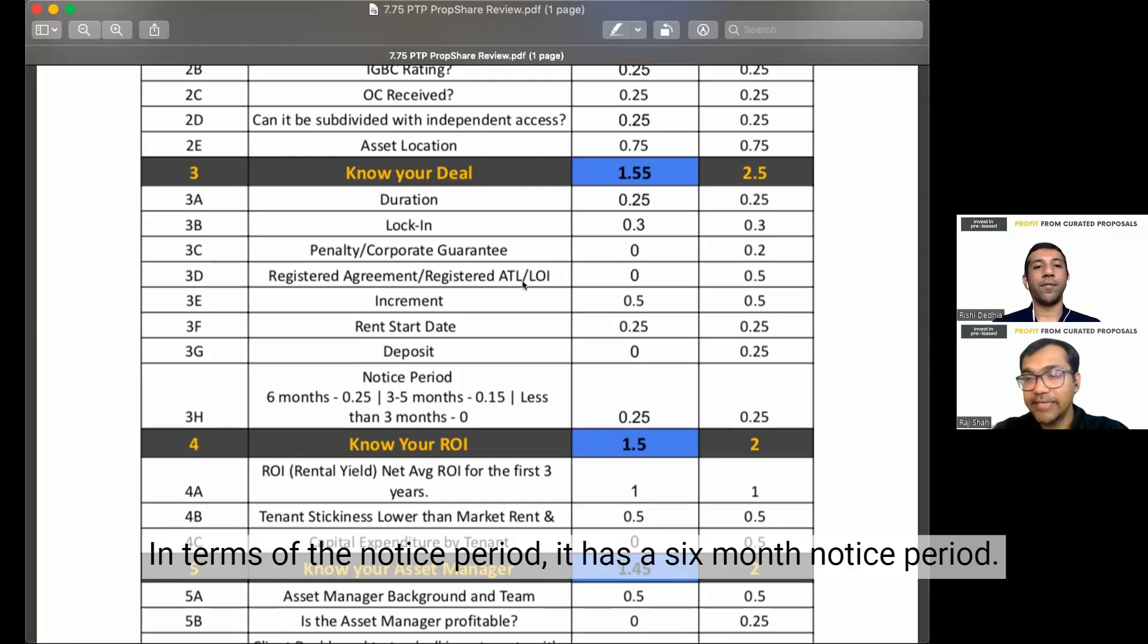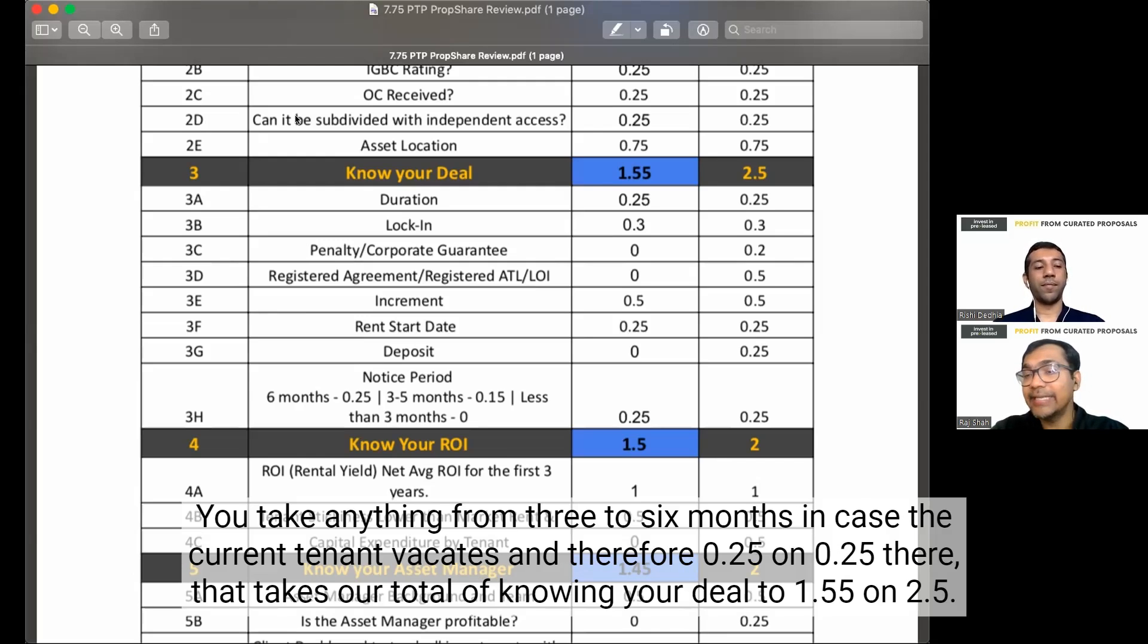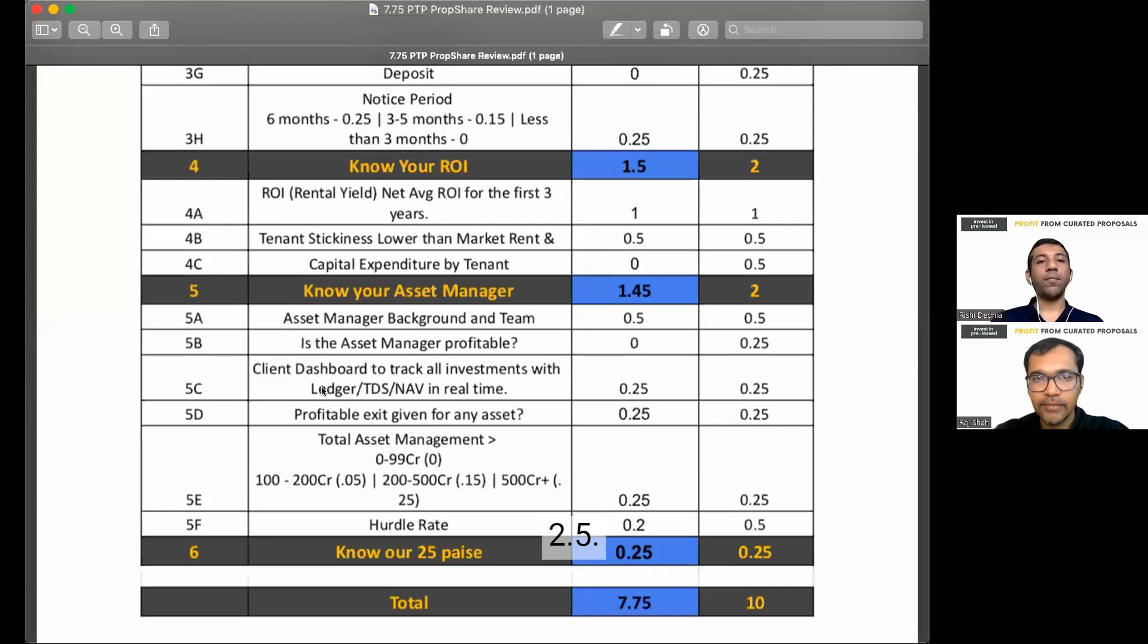In terms of the notice period, it has a 6-month notice period. And this is ideal because floor plate like this will need that you take anything from 3 to 6 months in case the current tenant vacates and therefore 0.25 on 0.25 there. That takes our total of knowing your deal to 1.55 on 2.5.